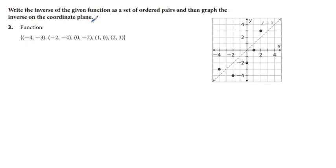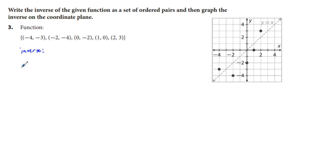Problem 3: write the inverse of the given function as a set of ordered pairs, then graph the inverse on a coordinate plane. This instruction applies for problems 3 and 4. We have the function with five sets of coordinate pairs. The inverse of a function is simply x and y switched, so instead of negative 4 comma negative 3, we have negative 3 comma negative 4.